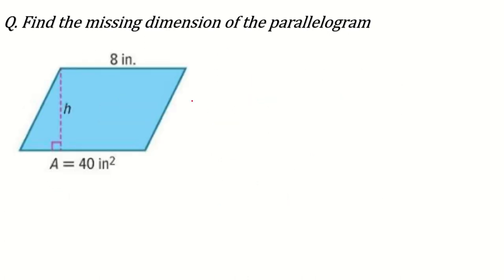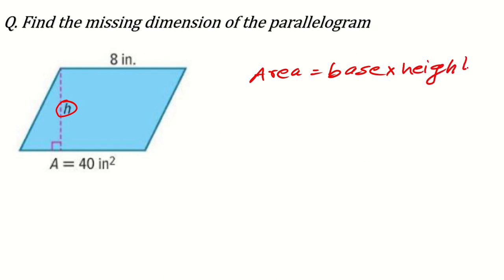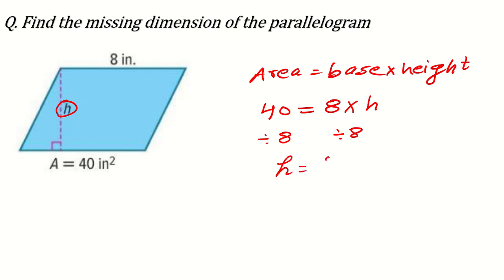Now another question — same type — find the missing dimension. This time the height is missing. Again: Area = base × height. Don't feel bored writing the formula again and again — it will give you good practice and help you memorize it. Area is 40, base is 8, height is unknown (H). Divide both sides by 8: H = 40 ÷ 8 = 5 inches.